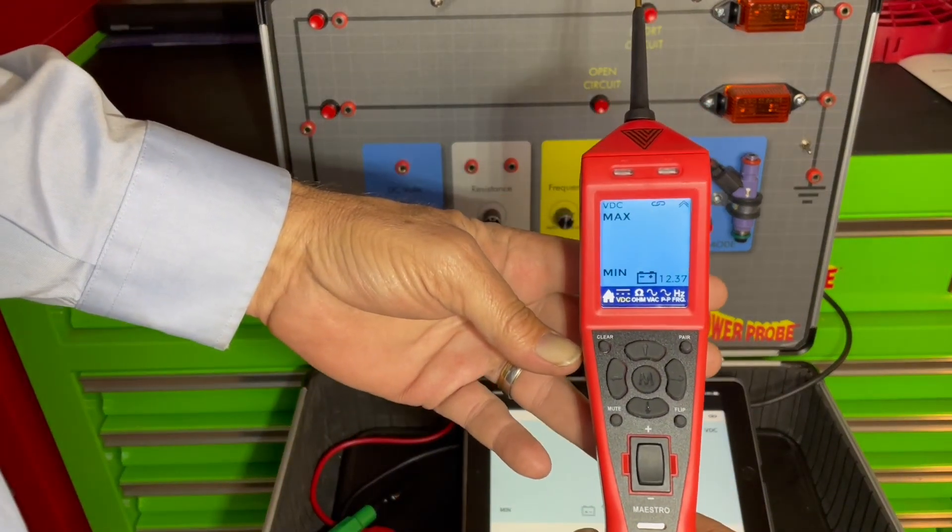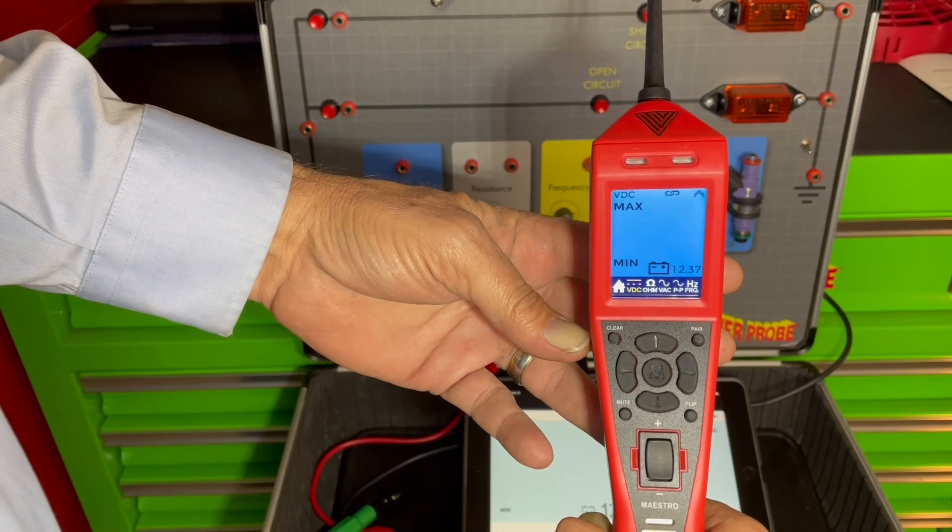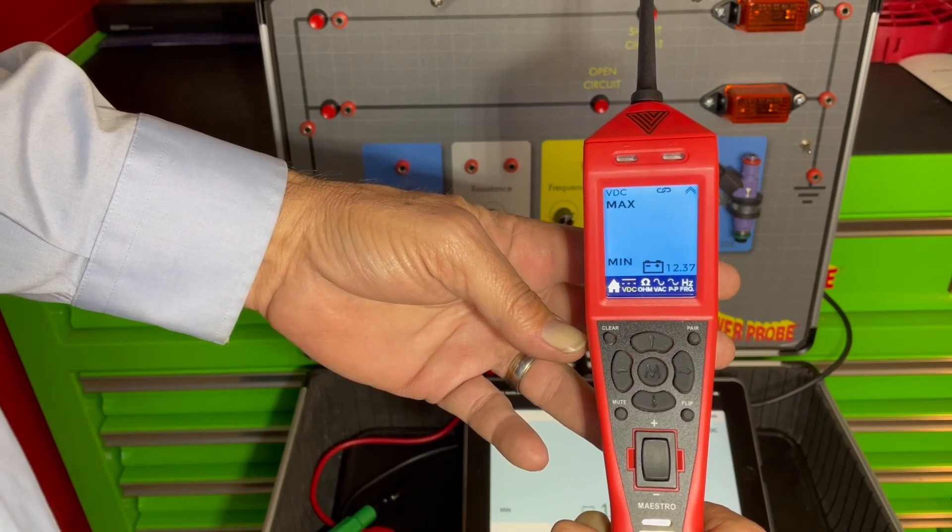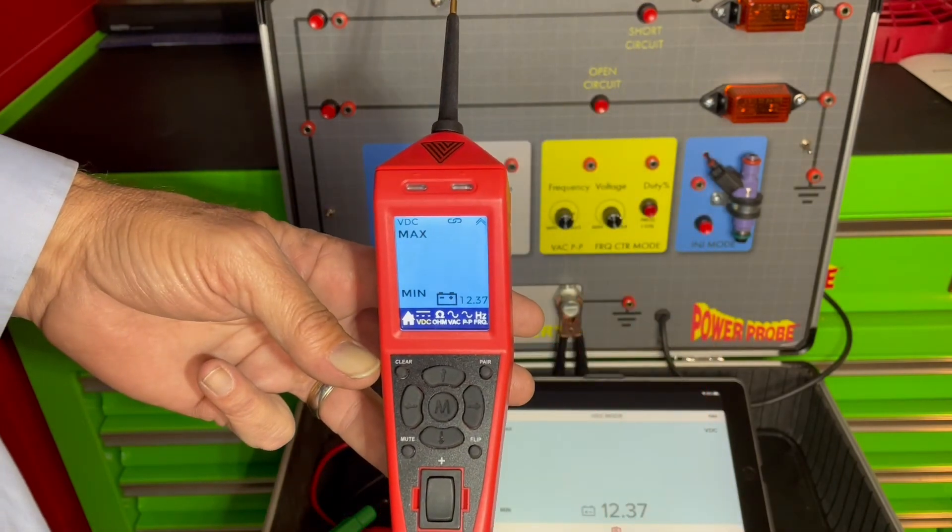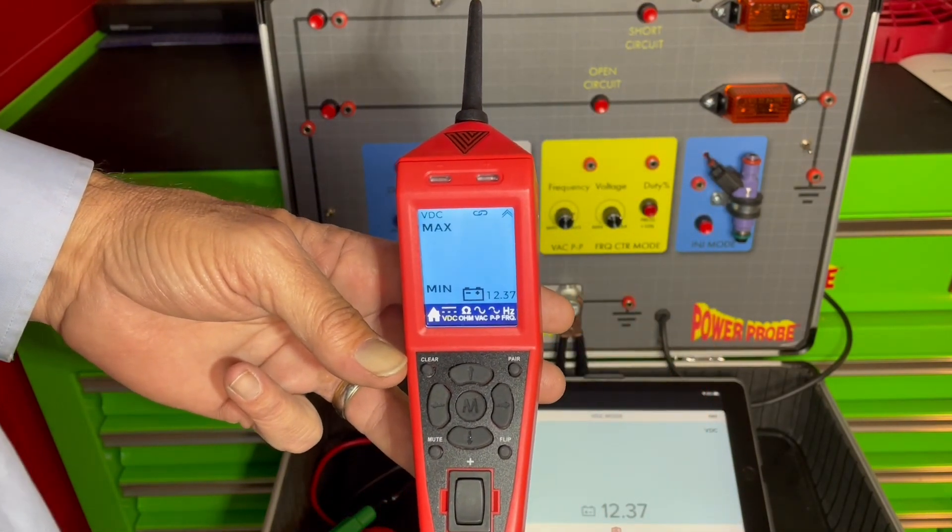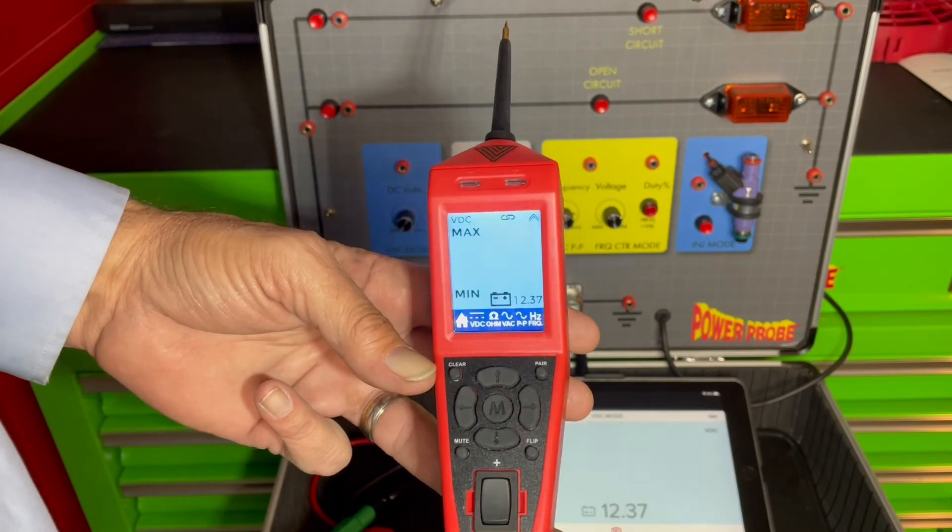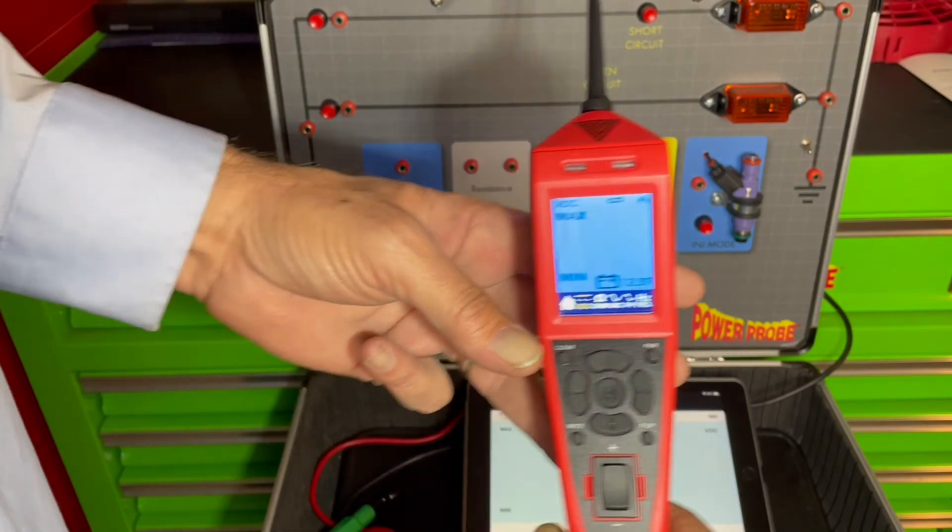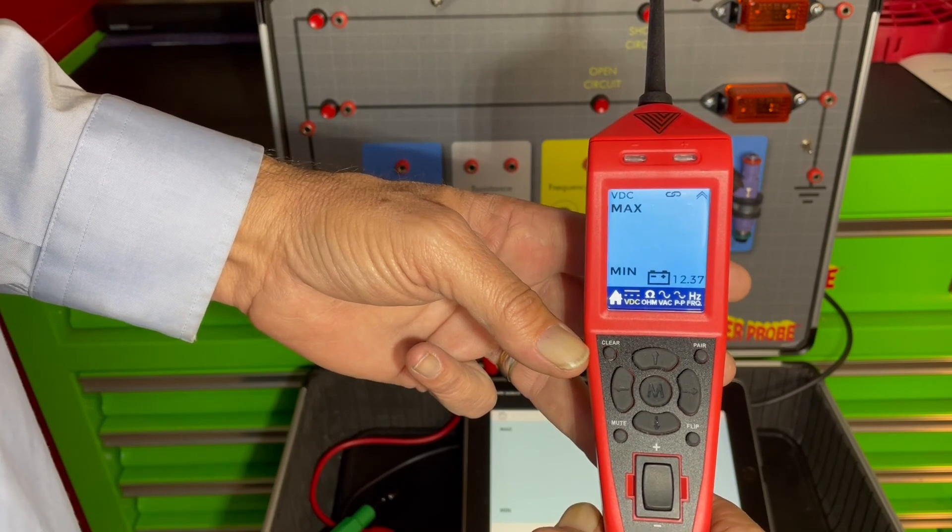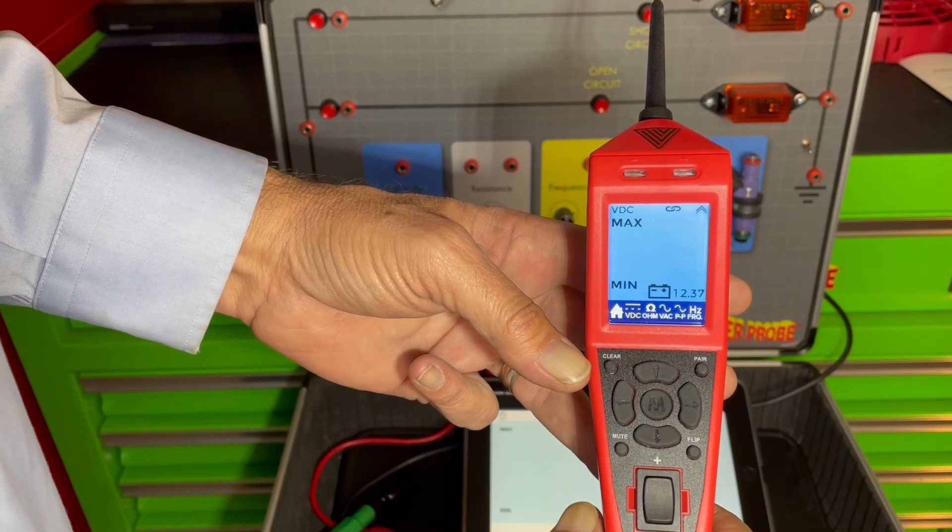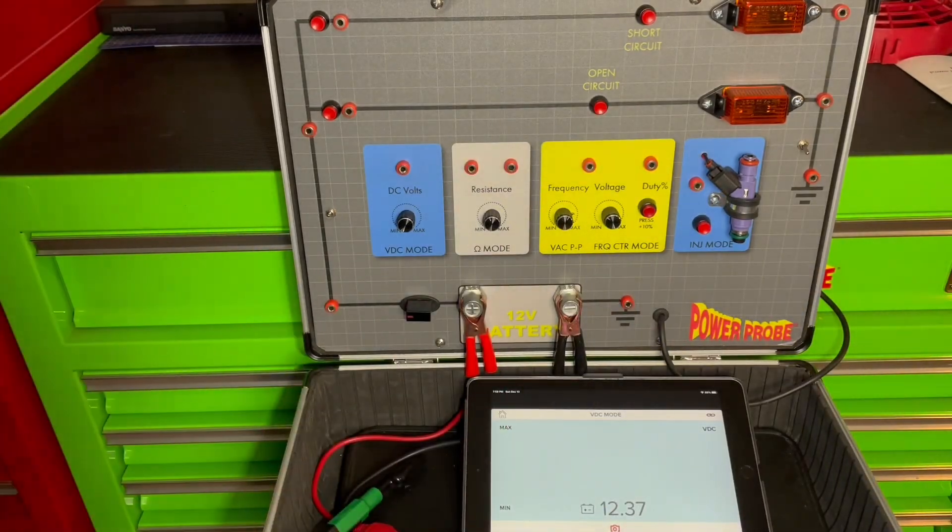So the Power Probe Pro Series Maestro is much like the Power Probe 4 with the ability to transfer readings to an external app via Bluetooth, where those readings can be stored or captured for later use, and the ability to display waveforms.